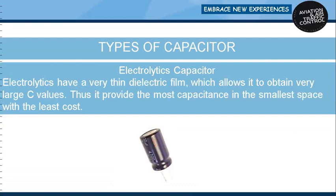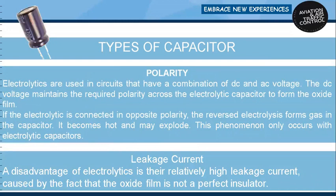Electrolytic capacitors have a very thin dielectric film, which allows them to obtain very large capacitance values, providing the most capacitance in the smallest space with the least cost. Electrolytics are used in circuits that have a combination of DC and AC voltage. The DC voltage maintains the required polarity across the electrolytic capacitor to form the oxide film. If connected in opposite polarity, reversed electrolysis forms gas in the capacitor — it becomes hot and may explode. This phenomenon only occurs with electrolytic capacitors. A disadvantage of electrolytics is their relatively high leakage current, caused by the fact that the oxide film is not a perfect insulator.